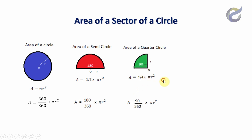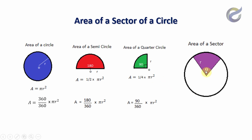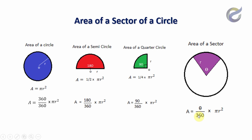Now, if you consider a sector, at the center it makes angle theta and radius r. The area of the sector is given by: area equals theta divided by 360, into pi r squared. This is the equation for a sector, and you must remember it to find the areas of sectors.